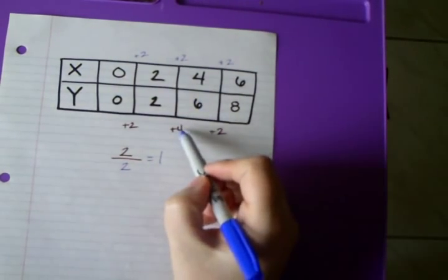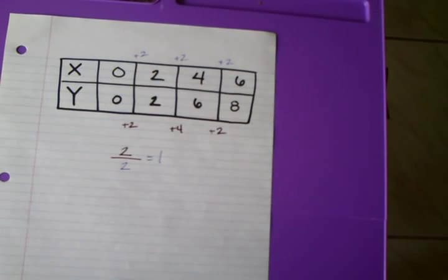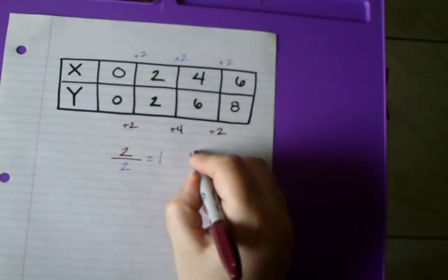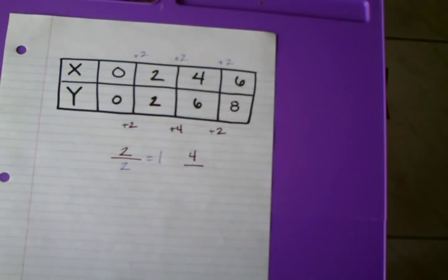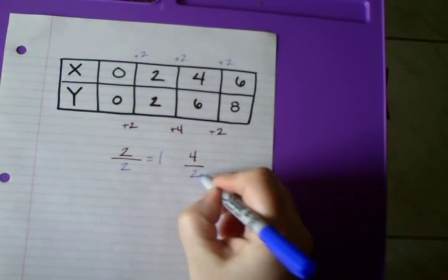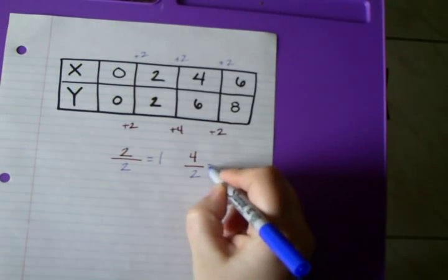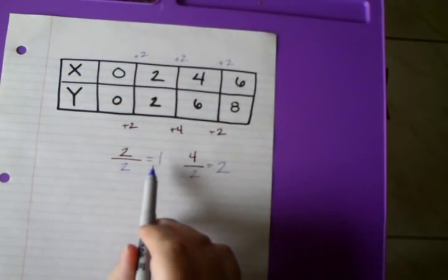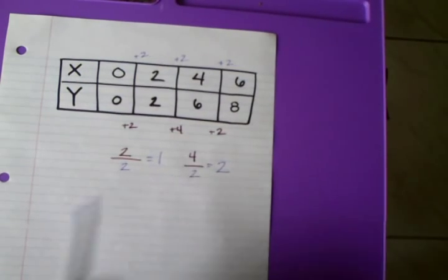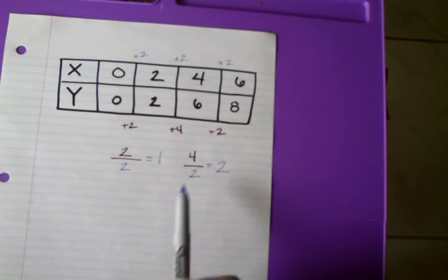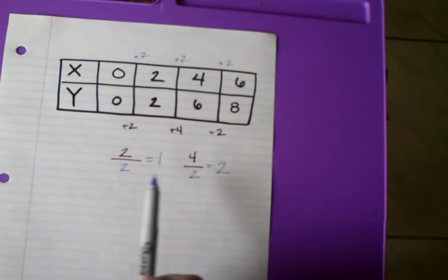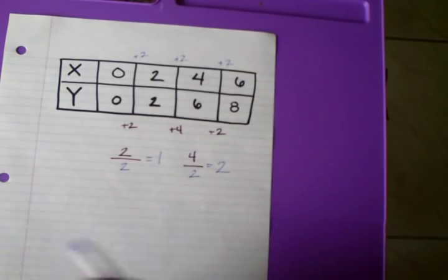We're going to look at the next one. I have 4 over 2. So 4 is the change in y, over 2, the change in x. 2 goes into 4 two times. Because these two numbers that I get are not the same, I can tell that it is not constant. The change here is variable, because each time is different or it varies.